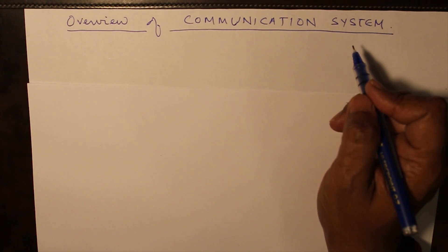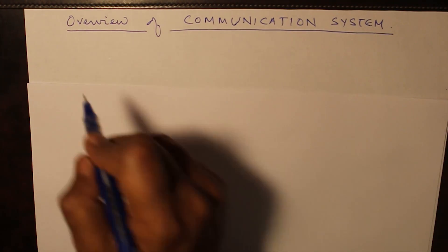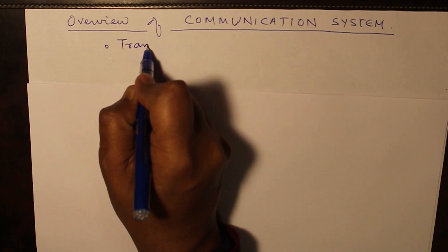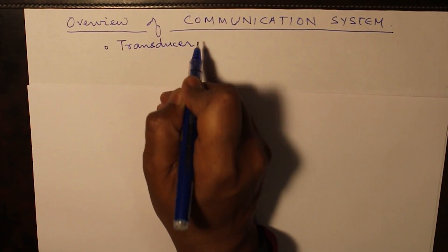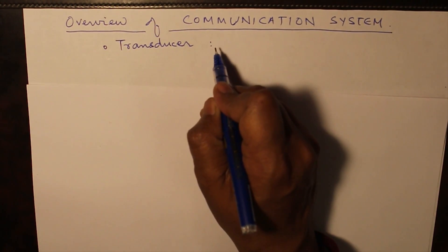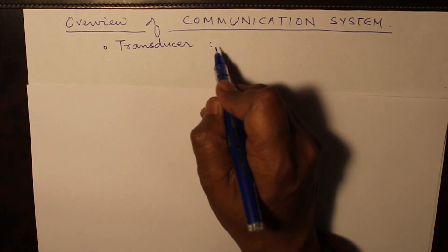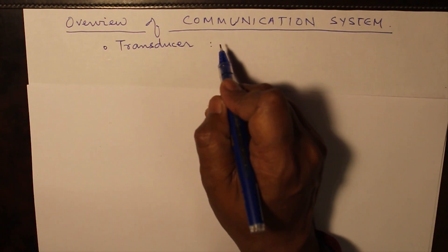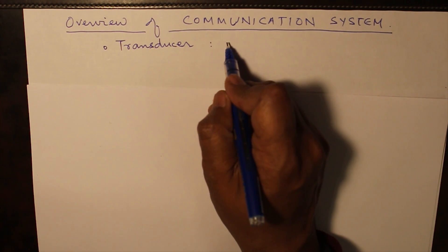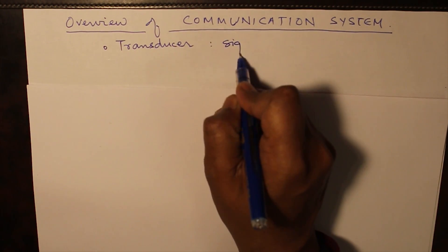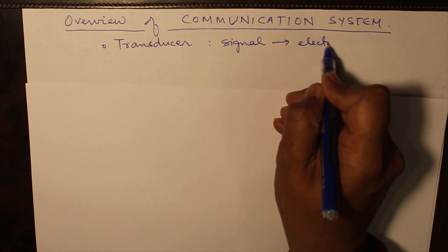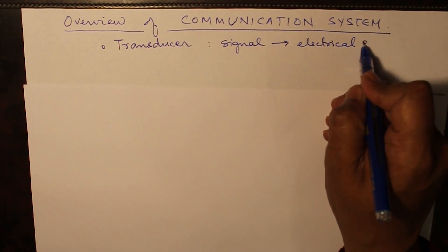There are some terms that we use. For example, we use the word Transducer. A transducer is any device which converts a signal from one form to another. Generally, it is easier to modify and manipulate electrical signals, so we define a transducer as a device that transforms any signal into an electrical signal.